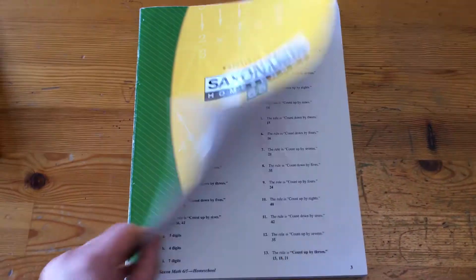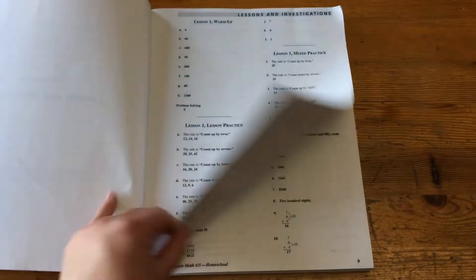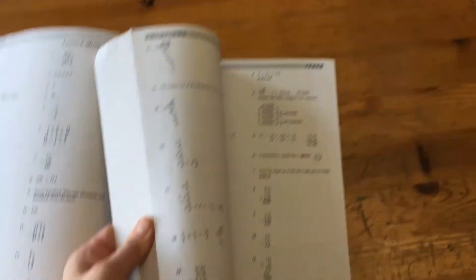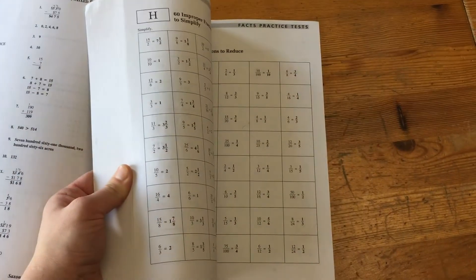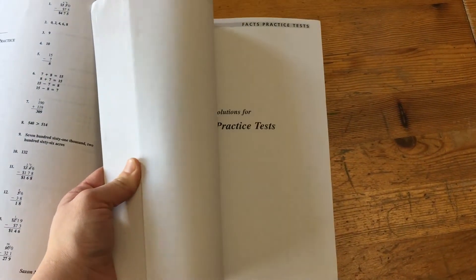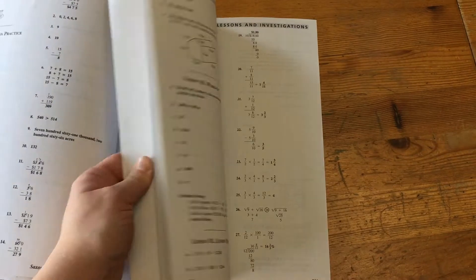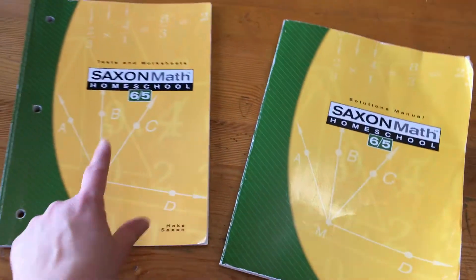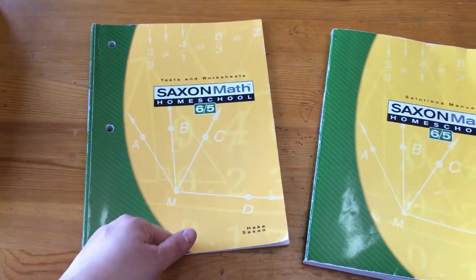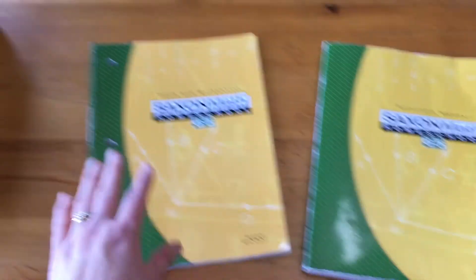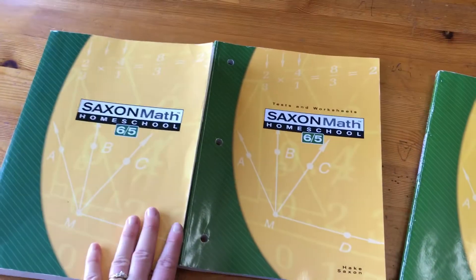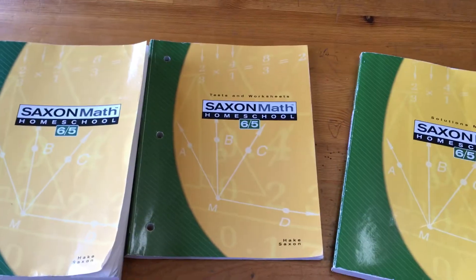And again, the solutions manual, all of the answers. And then at the very back are the test answers. And then there's those fact sheet ones just before that, like that. Again, I would just take out from here what they needed to do each week, and then put it in a binder, and keep it there. And he would do the questions from here in a notebook. So that's a look at the 6-5.